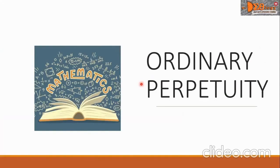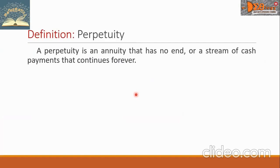Hi, everyone. Today we're going to study ordinary perpetuity. Let us first define perpetuity. A perpetuity is an annuity that has no end, or a stream of cash payments that continues forever.